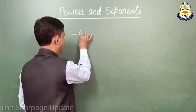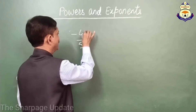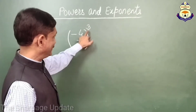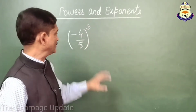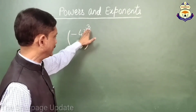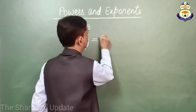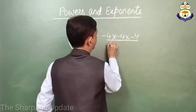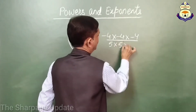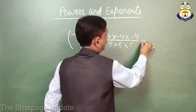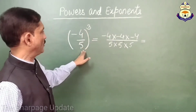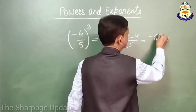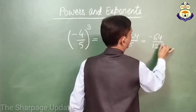For example, suppose we have (-4/5) raised to the power 3. Now you can see that 3 is an odd number. So the value of (-4/5)^3 will be equal to (-4 × -4 × -4) divided by (5 × 5 × 5), which equals -64/125.